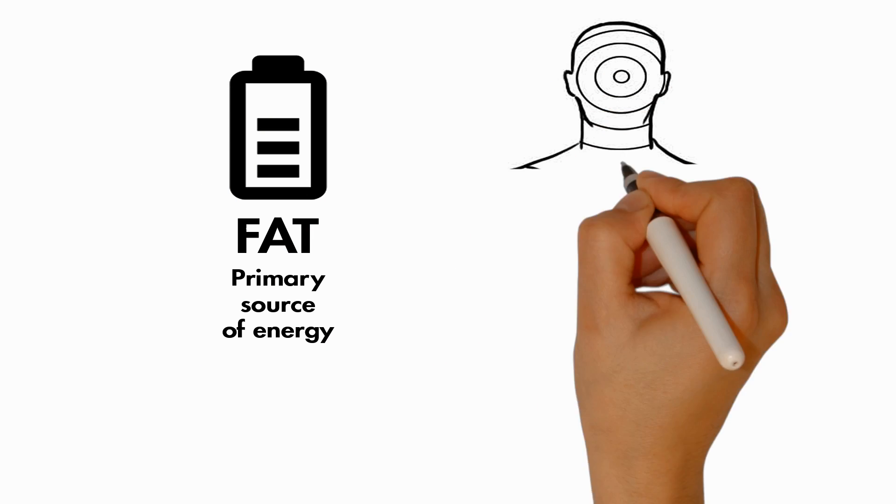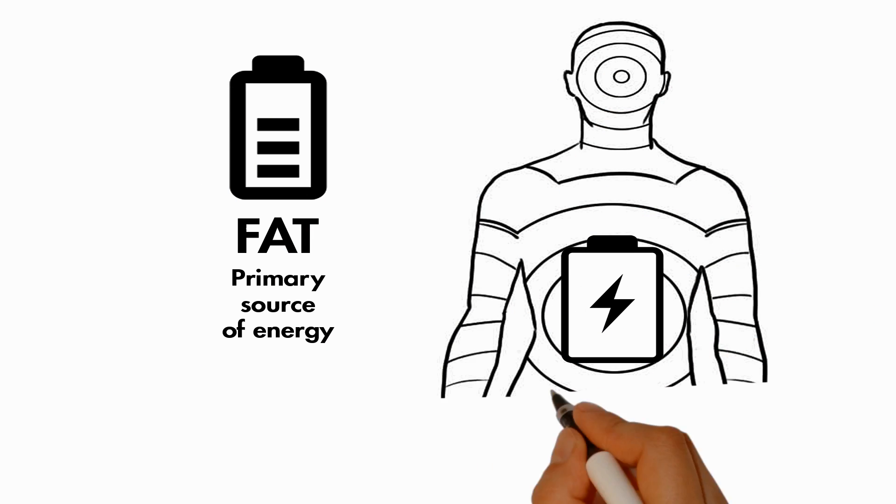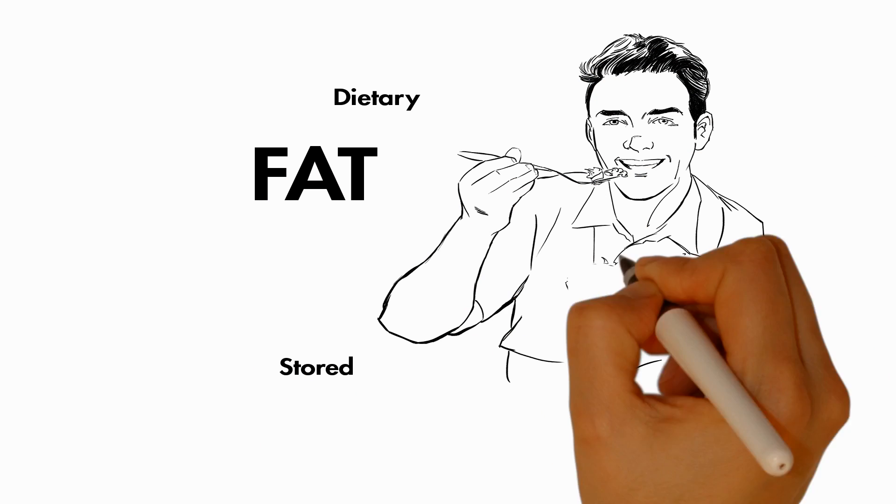When your body is in a state of ketosis, the primary source of energy is fat, either from dietary fat or stored fat.